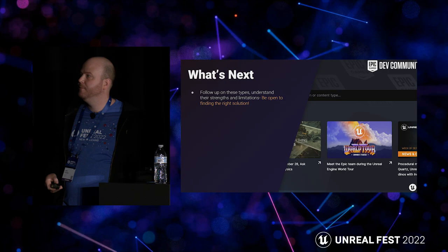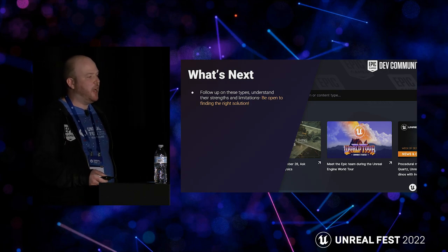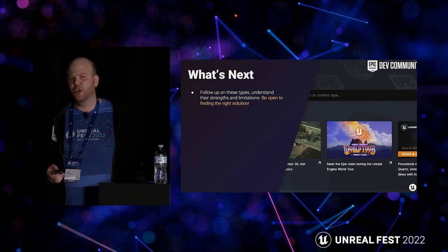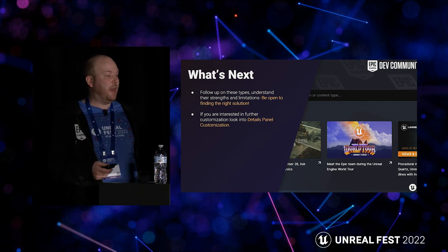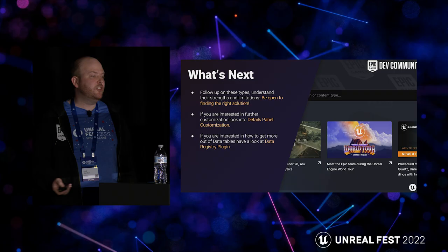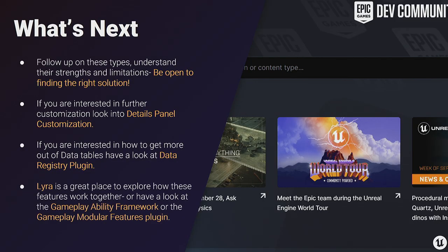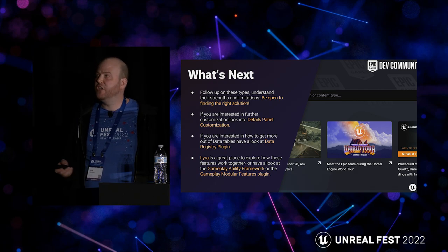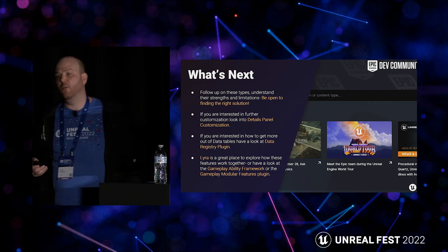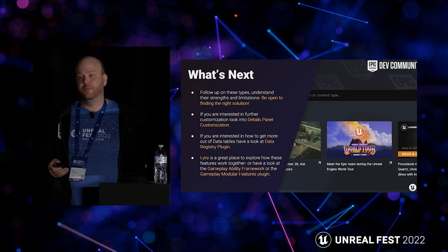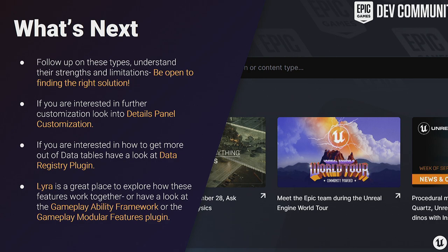Final note: the asset registry is async in the editor but synchronous in a game build, so be aware of that when building tools. To conclude: follow up on these types, understand their strengths and limitations, and be open to finding the right solution for your project. If you're really interested in customization, check out details panel customization. If you want to get more out of data tables, have a look at the new data registry plugin. And Lyra is a really good source for seeing how all these things fit together, along with the gameplay ability framework and gameplay modular features plugin. If we're making systems and data, we always want to be empathetic to how that data is going to be represented and how it fits in the system — to save huge efficiencies and ultimately have a better time developing. Thank you very much.